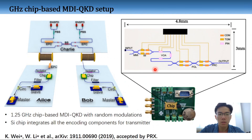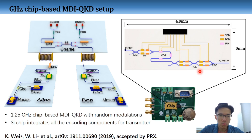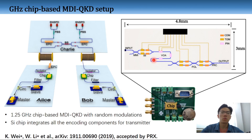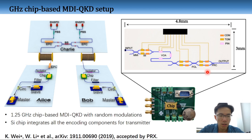As a first step, we experimentally demonstrate a 1.25 GHz polarization-encoding MDI QKD system with a silicon photonic modulation chip. The chip integrates the QKD encoding components of an intensity modulator, a polarization modulator, and three variable optical attenuators. The chips are fabricated by IMEC and packaged with a thermoelectric cooler. It has a small footprint of 4.8 x 3 mm. The intensity modulator utilizes a Mach-Zehnder interferometer structure and the phase between the two arms is modulated by a carrier depletion modulator.